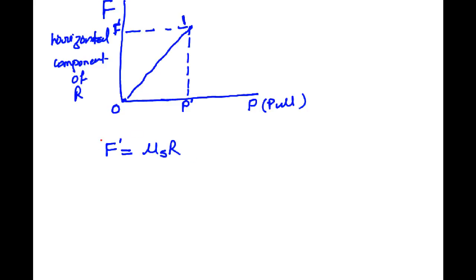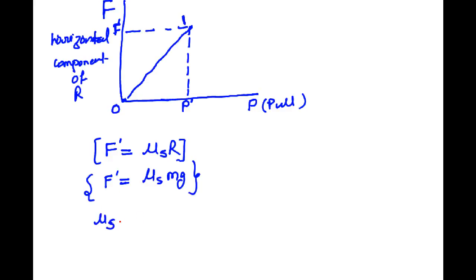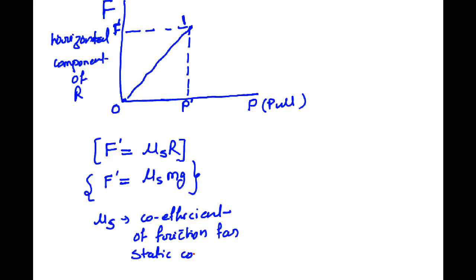By solving the FBD, we get F dash = μs × R, where R equals mg. Here μs is the coefficient of static friction — the static coefficient of friction.